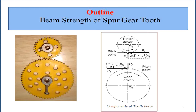Before the beam strength equations, we review the force analysis from the theory of machine elements. In spur gear mechanisms, two gears are present: one is the driver and one is the driven. In most cases, the smaller gear is considered the pinion and the bigger gear is called the driver.